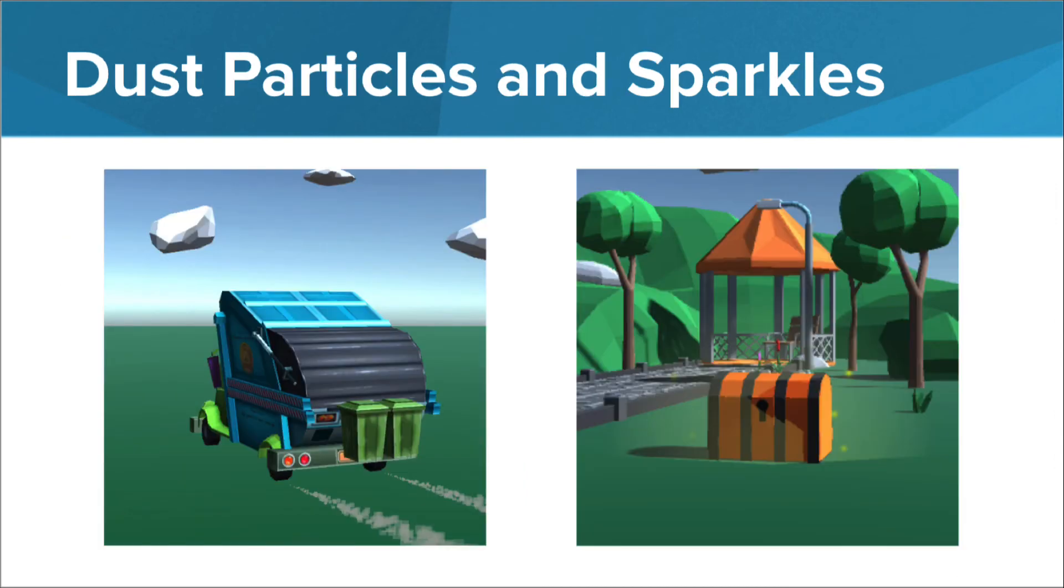In this lesson, you'll be guided through a couple different types of particle systems, using different techniques to create an intended visual effect. You'll add dust to a garbage truck's wheels, showing a player that the truck is moving at higher speeds. You'll also guide players to a mysterious treasure chest in our park game environment, with sparkles and glowing lights.